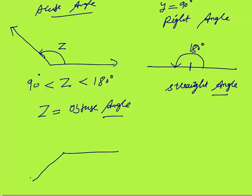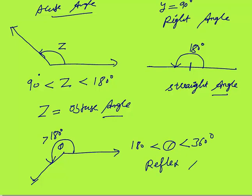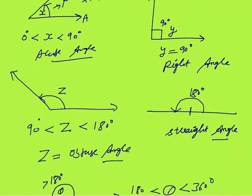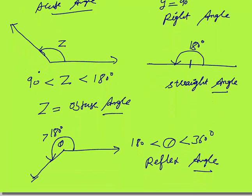When the angle is more than 180 degrees — let's say this is theta — whenever the angle is more than 180 and less than 360 degrees, that angle is called a reflex angle. So summarizing: angle less than 90 is acute; equal to 90 is right; greater than 90 but less than 180 is obtuse; 180 is straight; more than 180 but less than 360 is reflex angle.